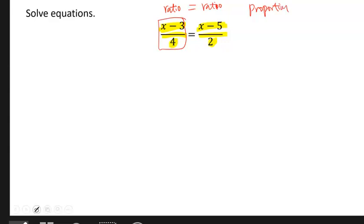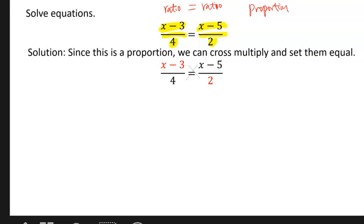Again, a proportion has the property that cross products are equal to each other, so we are going to cross multiply. We're going to do the left top times the right bottom, so x minus 3 times 2. Don't forget the top. We have to make sure we put them in a box, a pair of parentheses, because we have to multiply the entire top times the entire bottom. Same thing, we have to do the left bottom times the right top. And again, the right top has both x and minus 5 in there, so we have to make sure we put them in a pair of parentheses to indicate they're together.